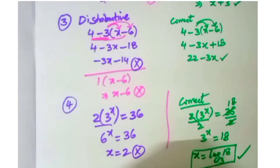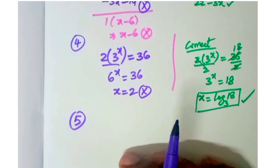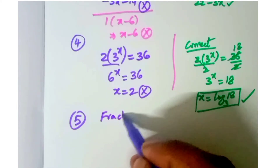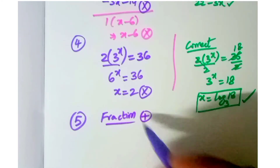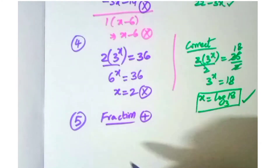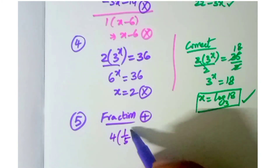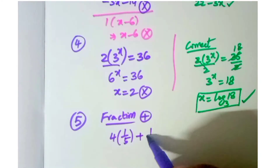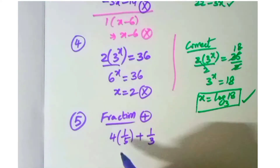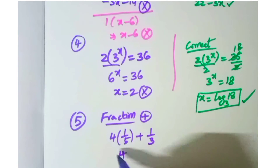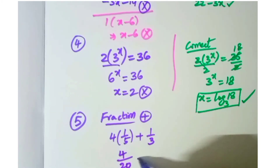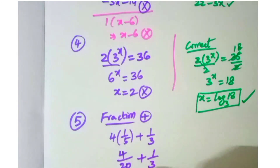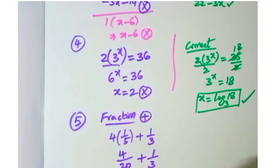The fifth error is operations with fractions — students confuse multiplying and adding fractions. For example: four into one-fifth plus one-third. They incorrectly do four into one equals four, four into five equals 20, giving four-twentieths plus one-third, then add numerators as four plus one equals five and denominators as 20 plus three equals 23, writing five by 23. That is the wrong process.